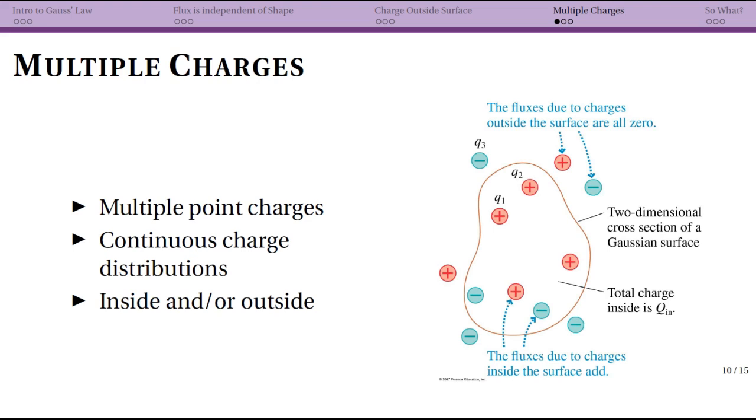Once we think about multiple point charges, we know that we can build up any continuous charge distribution from just point charges. So the argument will be for multiple discrete point charges, but we could build, for instance, a line of charge, a cylinder of charge, or a sheet of charge out of individual point charges.